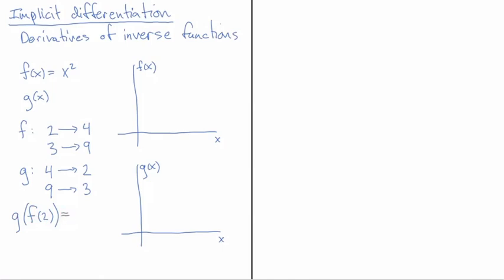So if I plug 2 into f I get 4, and then when I plug 4 into g I get 2 back, so this has to be equal to 2. And the same thing is true if you plug 3 into f you get 9, and then take 9 and plug it into g you should get 3 back.